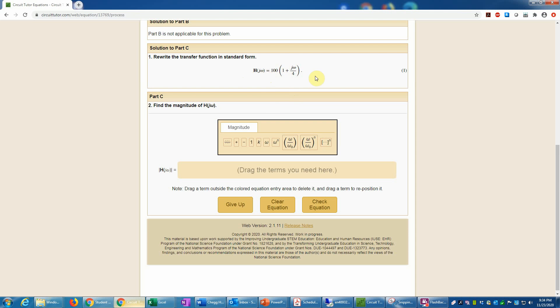In this case I don't have a product or quotient, so I don't need those rules. But what I do need to remember is that when we have a sum like this, we have a real part of 1 and an imaginary part of omega over 4. We'll use the standard formula for the magnitude of a complex number, which is the square root of the real part squared plus the imaginary part squared.